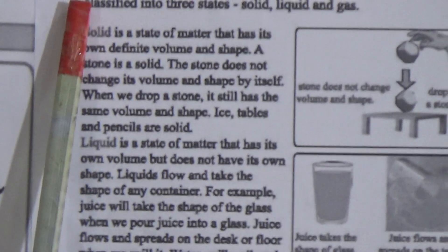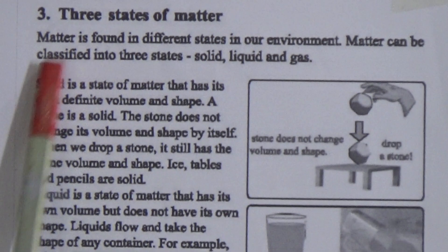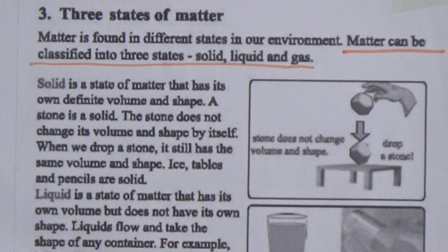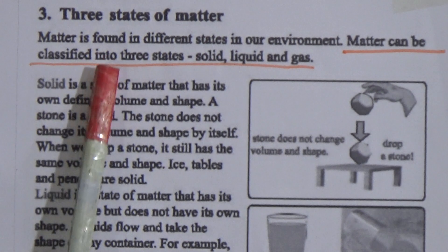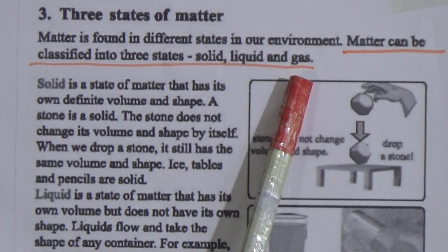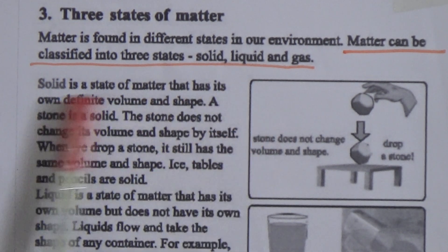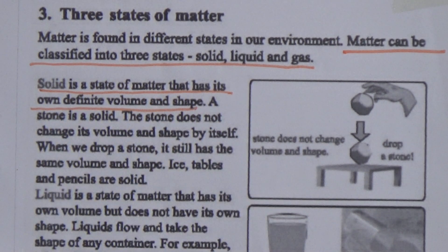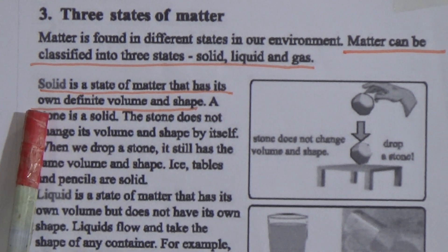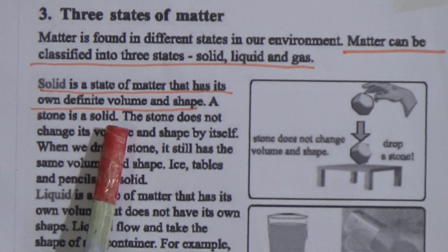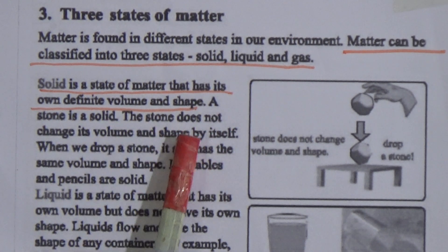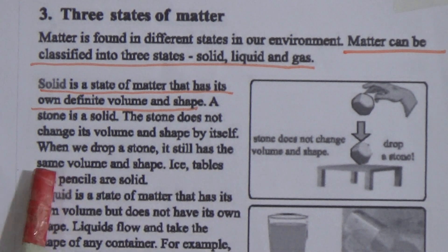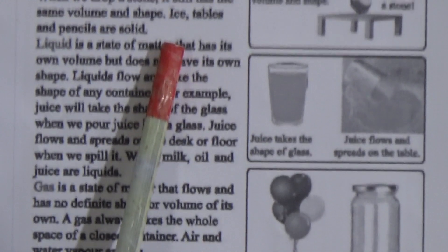Now, three states of matter. Matter is found in different states in our environment. Matter can be classified into three states: solid, liquid, and gas. Underline and memorize this line. Solid is a state of matter that has its own definite volume and shape. A stone is an example of solid state — the stone does not change its volume and shape by itself. Ice, tables, and pencils are also solid.